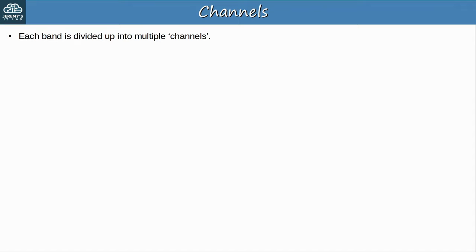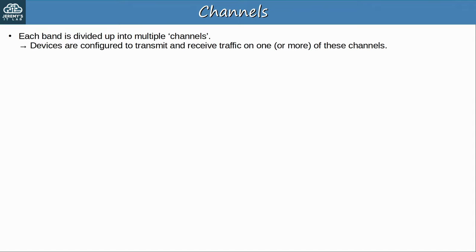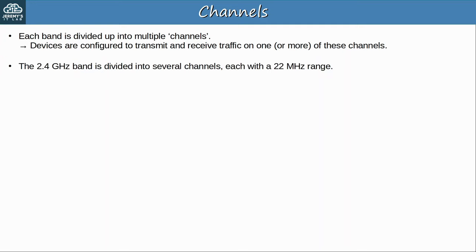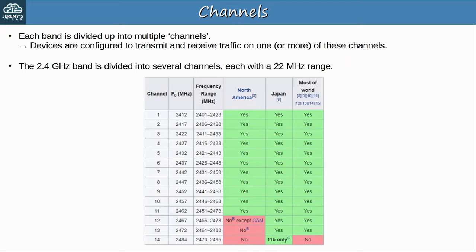Each band is divided up into multiple channels, and devices are configured to transmit and receive traffic on one or more of these channels. Channel bonding can be used to combine channels together. For example, the 2.4 GHz band is divided into several channels, each with a 22 MHz range. Note that the available channels differ by country. An important aspect of these channels is that they overlap — for example, channel 1 is from 2401 MHz to 2423 MHz, which has some overlap with channels 2, 3, 4, and 5.